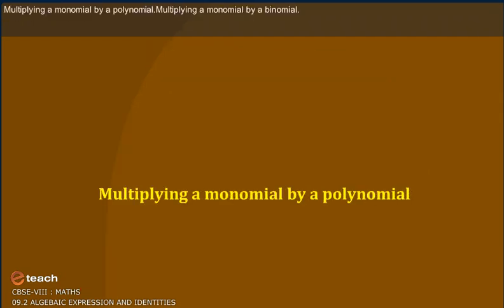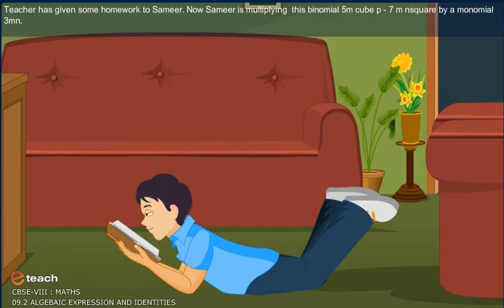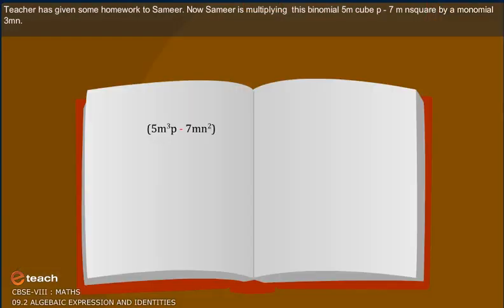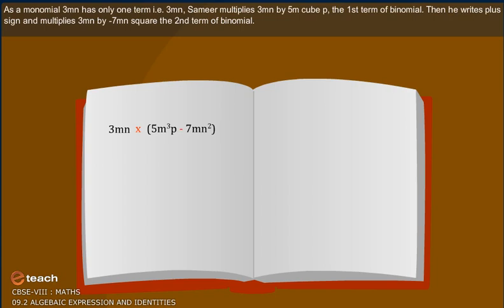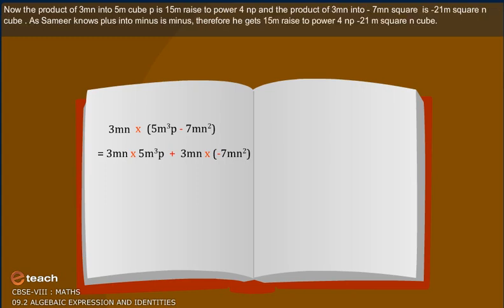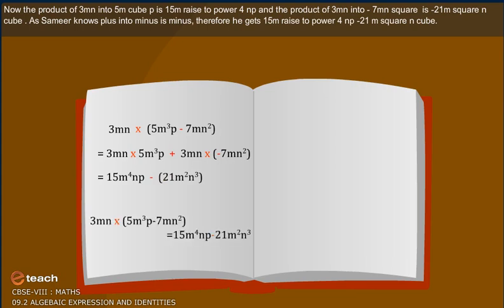Multiplying a monomial by a polynomial — multiplying a monomial by a binomial. Teacher has given some homework to Samir. Samir is multiplying the binomial 5m cubed p minus 7mn squared by the monomial 3mn. Since 3mn has only one term, Samir multiplies 3mn by 5m cubed p, the first term of the binomial. Then he writes a plus sign and multiplies 3mn by minus 7mn squared. The product of 3mn and 5m cubed p is 15m to the power 4 np.